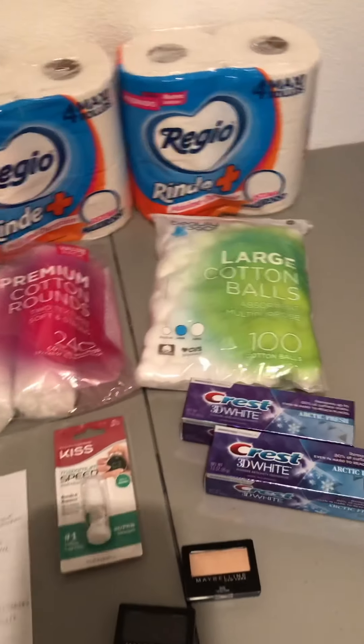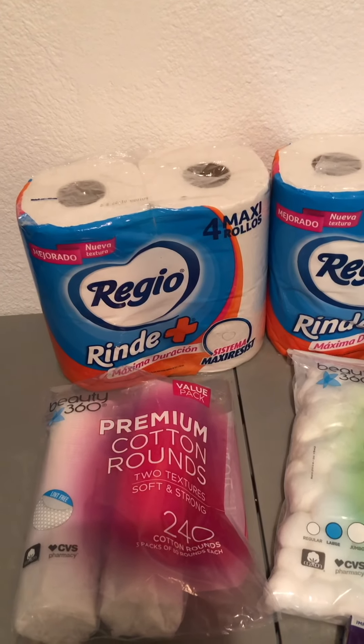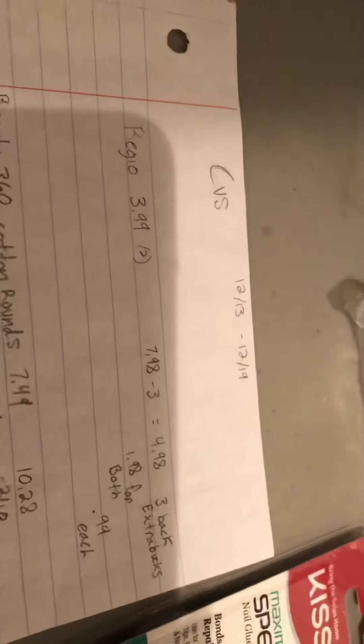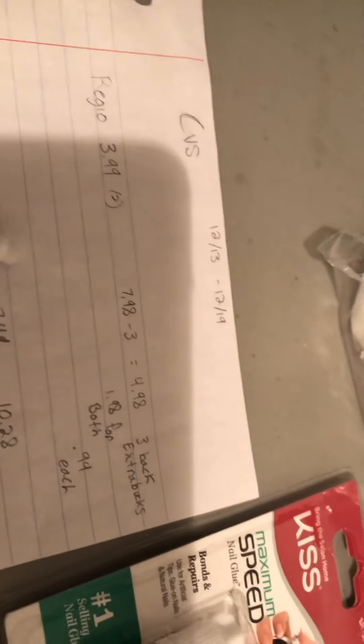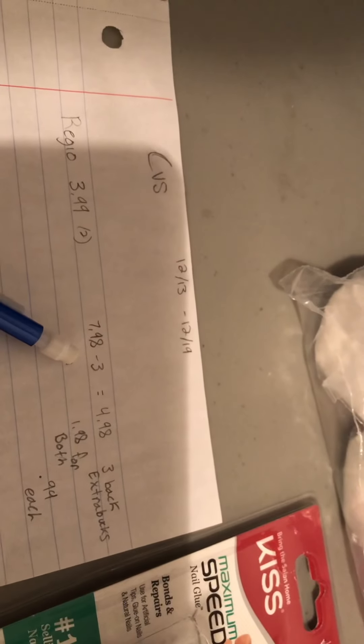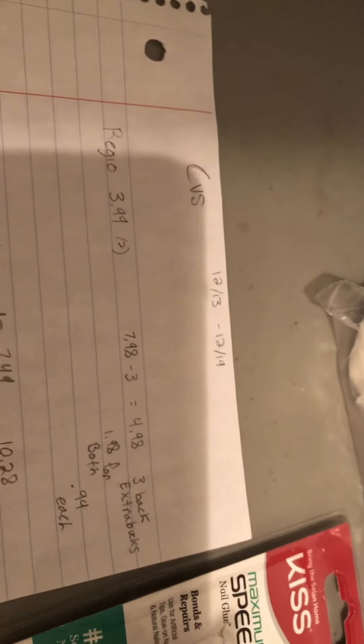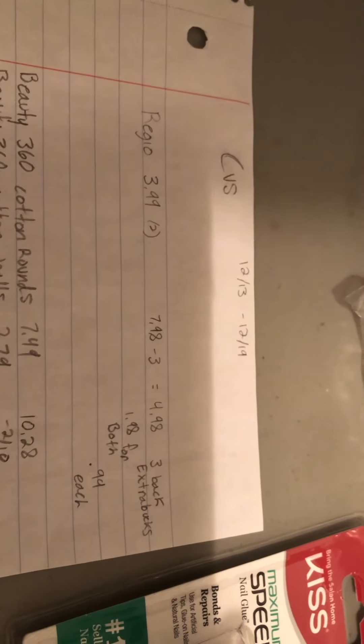So let's get into it. The first deal we'll talk about is the toilet paper deal. Right now they're $3.99, when you buy two it'll be $7.98. I had a $3 off of two CVS coupon bringing the total down to $4.98. This is a limit of one and you'll get back a $3 extra buck for purchasing two, making it $1.98 for both or $0.99 each.